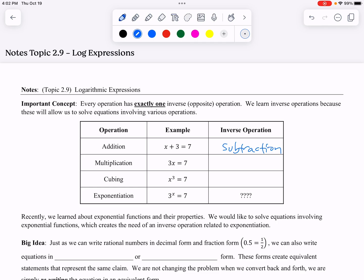The inverse operation for multiplication is division. The inverse operation of cubing something is taking the cube root. And the inverse operation for having an exponent is taking the log of something.